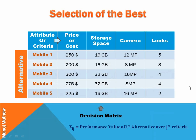After substituting the numerical values, we get a decision matrix. In this, each value in each cell is called the performance value. For example, 300 is the performance value of the third alternative, i.e. mobile 3, over the first criteria, i.e. cost.